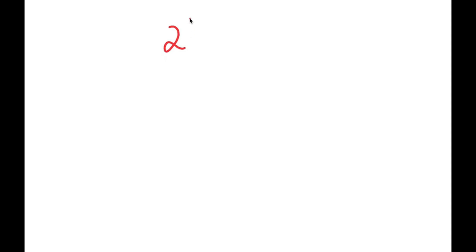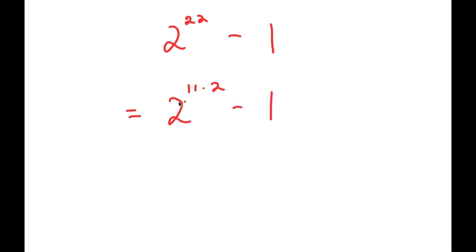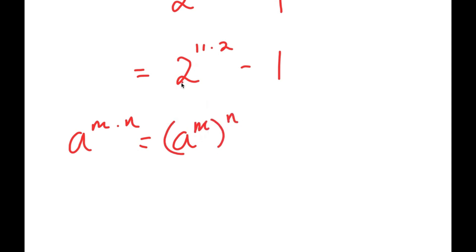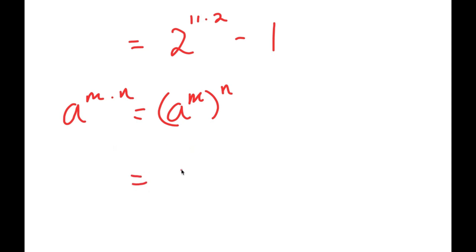In this video, I'm going to solve the problem 2 to the power of 22 minus 1. To solve this, what I'm first going to do is rewrite this as 2 to the power of 11 times 2 minus 1. Now, if I have something in the form a to the power of m times n, this is equal to a to the power of m to the power of n. So 2 to the power of 11 times 2 is equal to 2 to the power of 11, to the power of 2, minus 1.